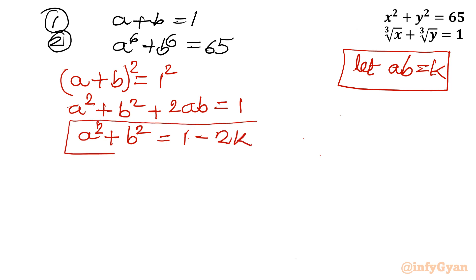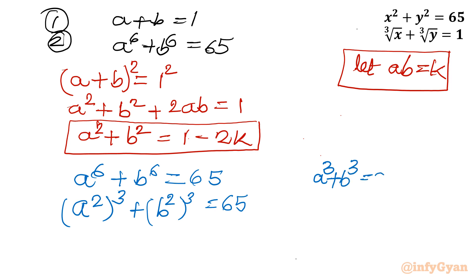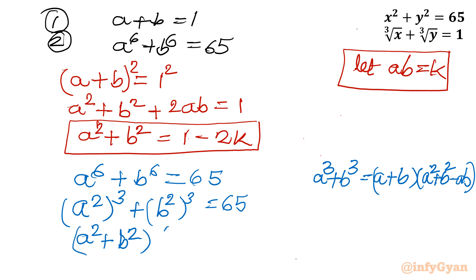Now for the equation a⁶ plus b⁶ equals 65: we can write a⁶ as (a²)³ and b⁶ as (b²)³. Using the sum of cubes formula — a³ plus b³ equals (a plus b)(a² plus b² minus ab) — we apply it here: (a² plus b²) times (a⁴ plus b⁴ minus a²b²) equals 65.